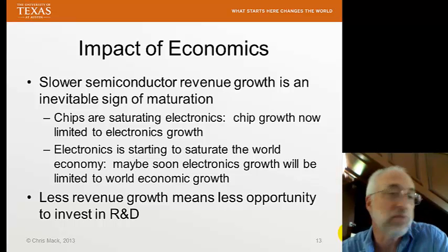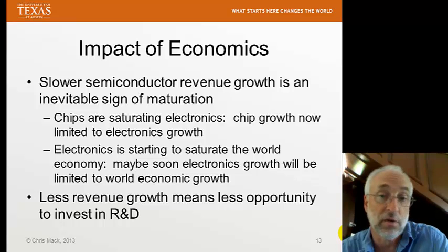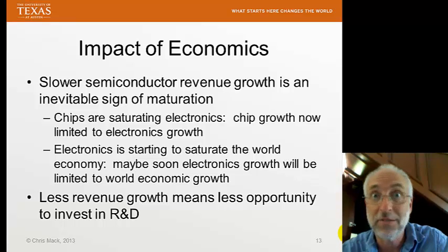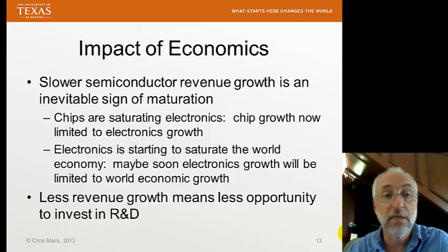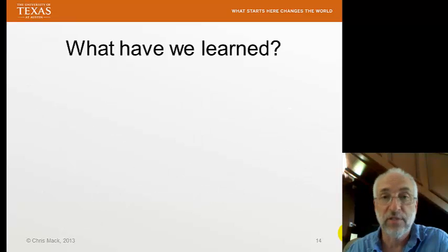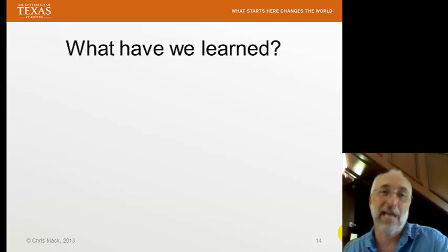Slower revenue growth is a sign of maturation. Chips have saturated the electronics industry, so chip growth is now limited to the growth of the electronics industry as a whole. Electronics is starting to saturate the world economy — you can only sell so many cell phones. After that, the economic growth rate of the electronics industry will be limited to the world growth rate, meaning probably another factor of two reduction in growth rate. This means less opportunity to invest in R&D. That's the state of the semiconductor industry from an economic perspective.